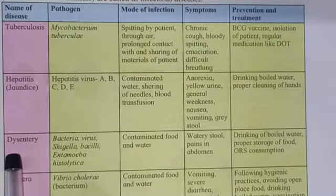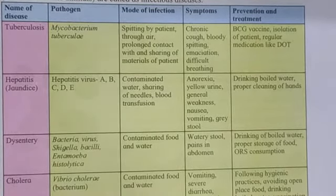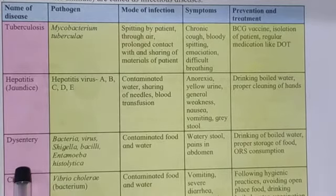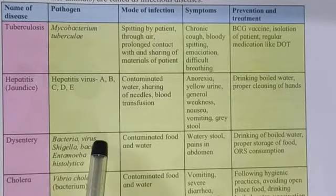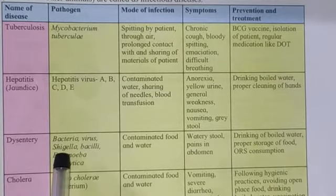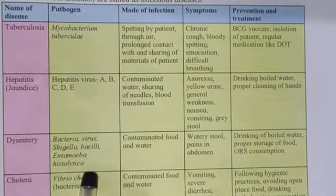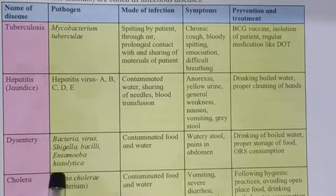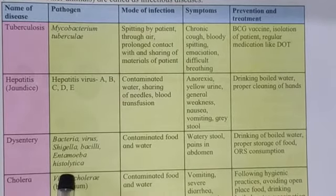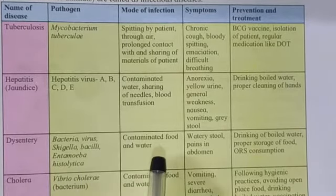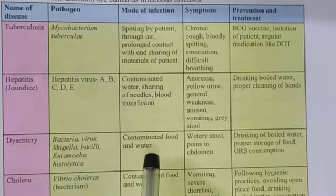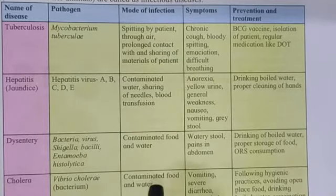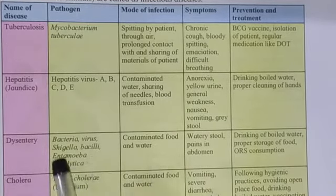The next disease is dysentery. A person having dysentery has to go to the washroom again and again. It is caused by pathogens like bacteria and viruses — specifically Shigella bacilli and Entamoeba histolytica. Dysentery occurs because of contaminated food and water. So it is always necessary to wash your hands before eating and not to eat food from open outside stalls, because they may be contaminated by these pathogens.